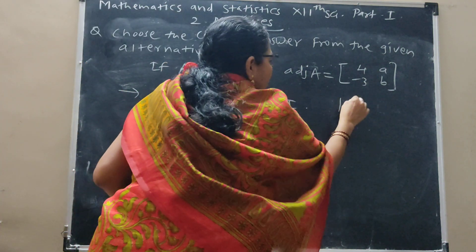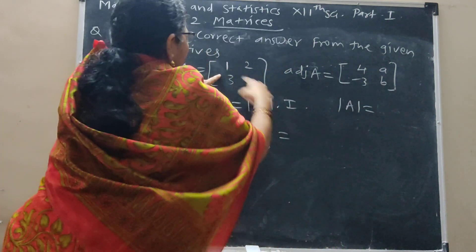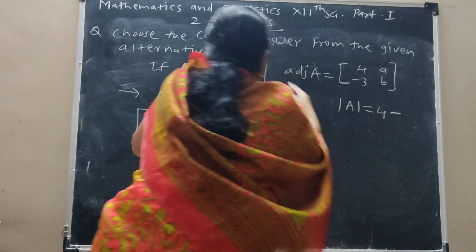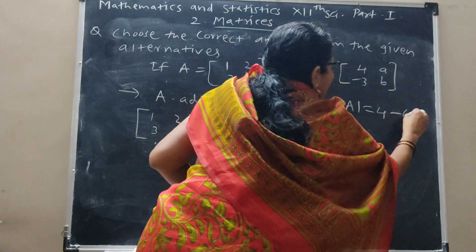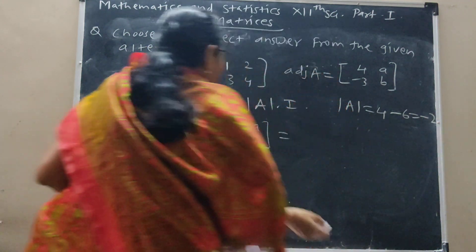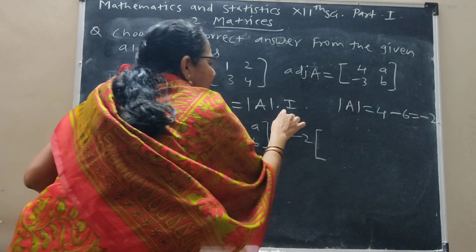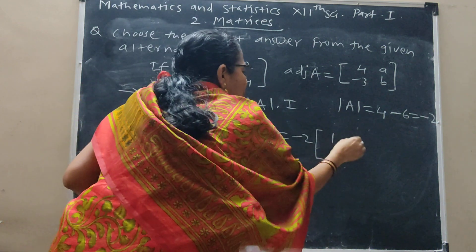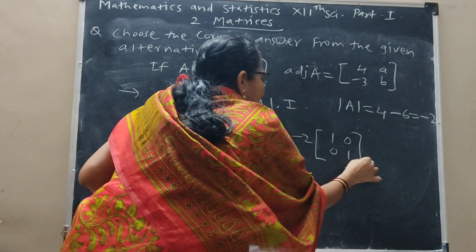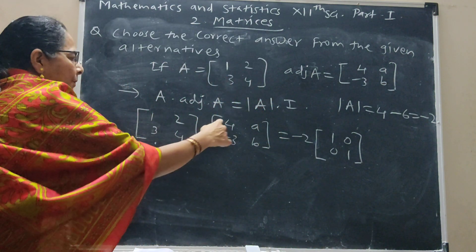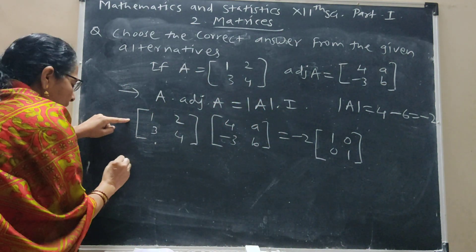Determinant A, we have to find 4 minus 6, which is equal to minus 2. Minus 2 into I, the second order unit matrix [1, 0; 0, 1].